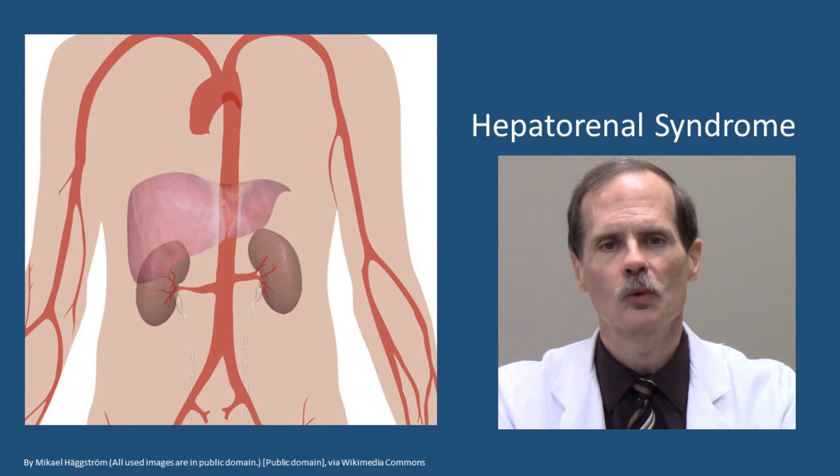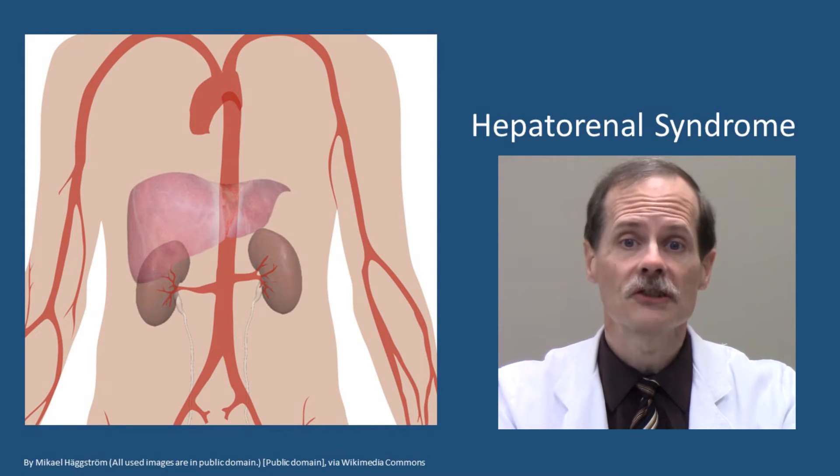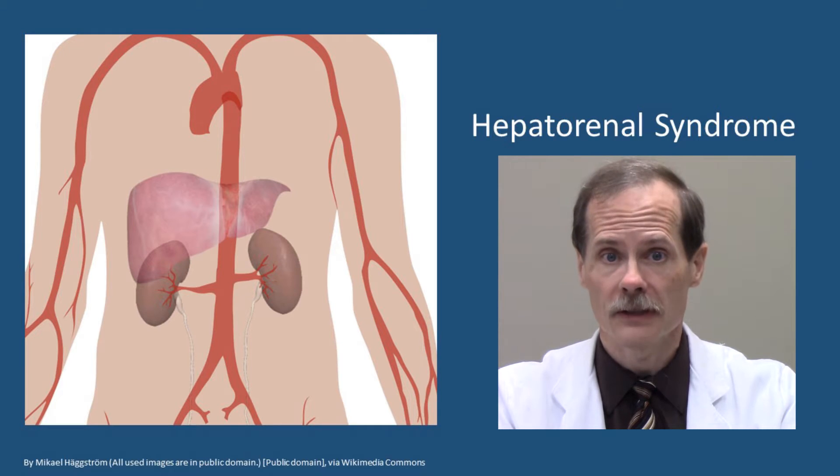Patients with severe hepatic cirrhosis often develop renal failure as well. The pathology is complex, but it's thought to center on alterations in systemic blood flow that damage the kidney. This is called hepatorenal syndrome. If these patients don't receive a liver transplant, they're likely to die within a few months.